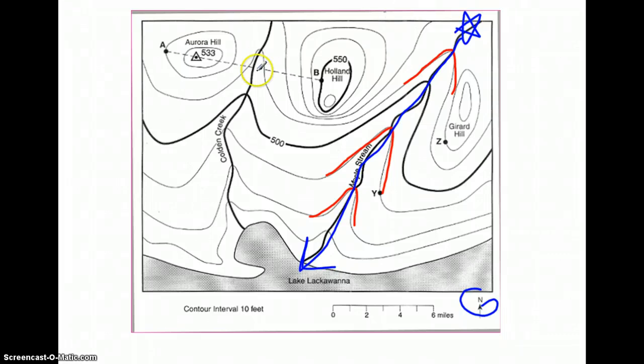Colden Creek over here, if we look at our lines, here are our Vs, is also flowing in a southerly direction towards the lake. Okay? Let's take a look at one more map.